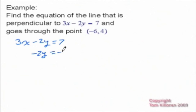So we're going to have negative 2y equals negative 3x plus 7, and then divide everybody by negative 2. So we're going to get y equals positive 3 halves x minus 7 halves. And the only important thing here is the slope of the line, which is the coefficient of x, which is 3 halves.